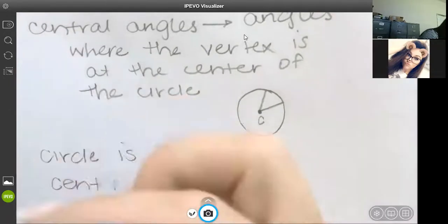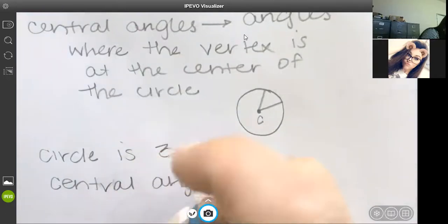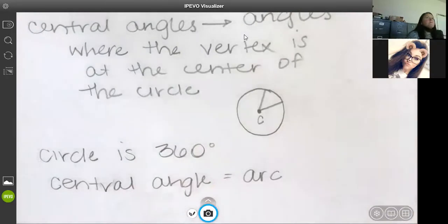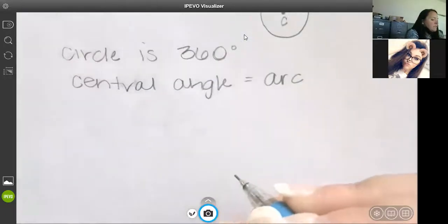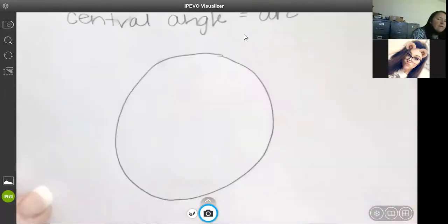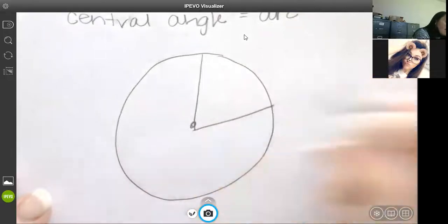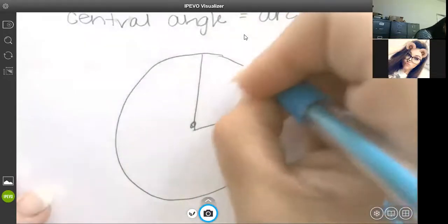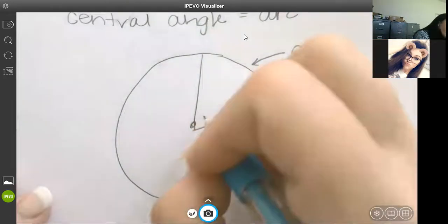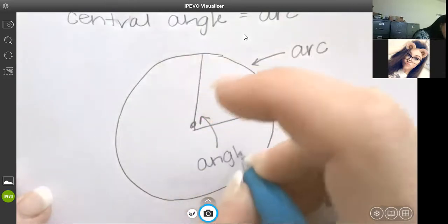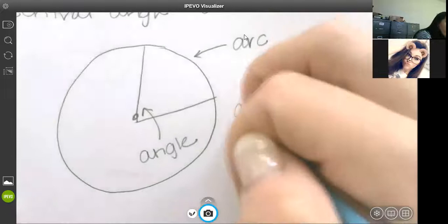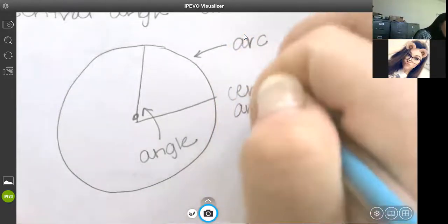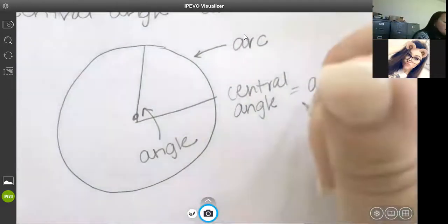Central angles are angles where the vertex is at the center of the circle. And I promise it's really easy. So just trust me, your homework, quiz, whatever will not take you very long at all.